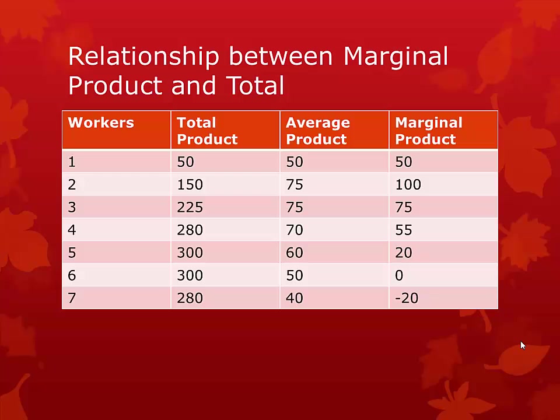But the hiring of some workers leads to different changes in product than the hiring of others. The second worker gives me a marginal product of 100. However, the seventh worker gives me a marginal product of negative 20, meaning this worker causes a change in total output of negative 20. However, the average product is still 40. This is important to remember because marginal is not the same thing as average.